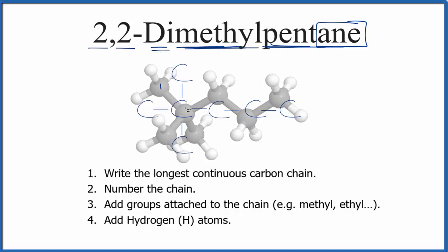So we go over 1, 2, and we can see these carbons here, these methyl groups here and here. Those are attached to the second carbon. So we have 2,2-dimethylpentane.